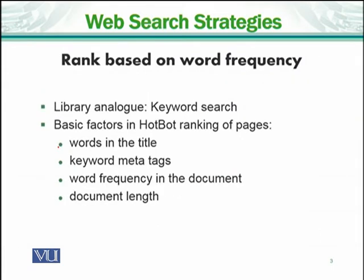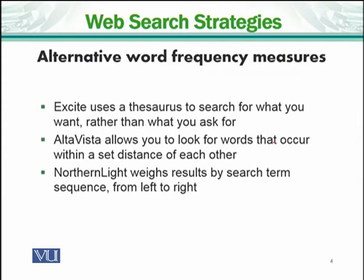First, ranked based on word frequency. You can search out keywords as we have done. This includes words in the title, keywords in the meta tag, word frequency, and document links. The most words on the internet will be searched across other documents. We also have different measures using alternative word frequency — for example, using different thesaurus entries including synonyms, hypernyms, and antonyms.